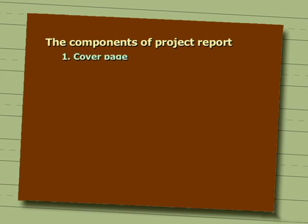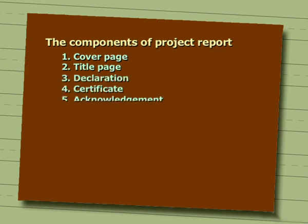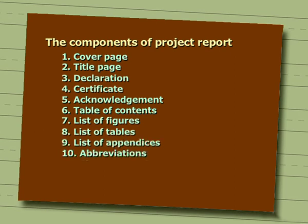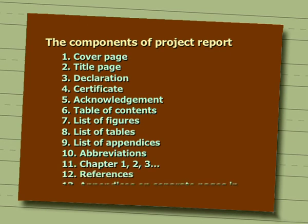The project report should have the components of cover page, title page, declaration, certificate by the college and the business organization, acknowledgement, table of contents, list of figures, list of tables, list of appendices, abbreviations, chapters 1, 2, 3 and so on, references, and appendices on separate pages in the same order. The main headings and subheadings should be clearly listed in the table of contents.